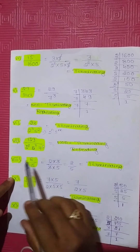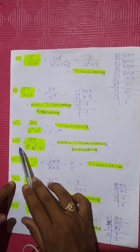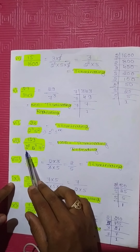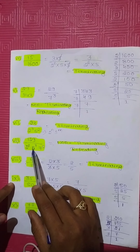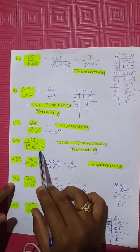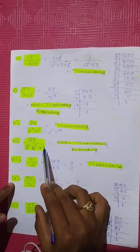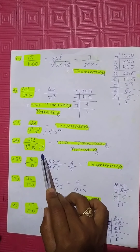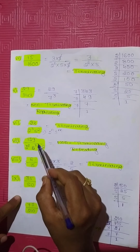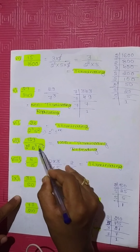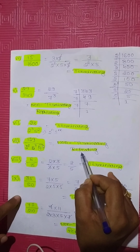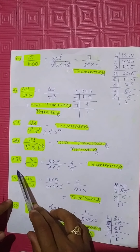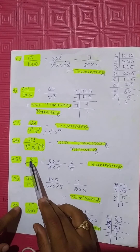Seventh question: 129 divided by 2 to the power of 2, into 5 to the power of 7, into 7 to the power of 5. Since 7 is present in the denominator, this is a non-terminating repeating decimal expansion.